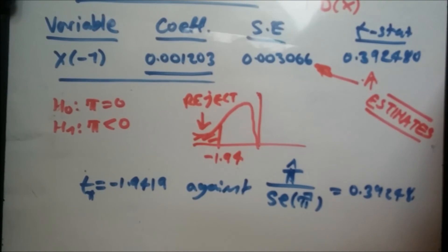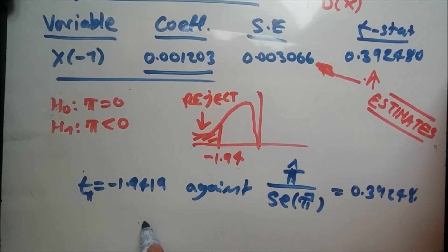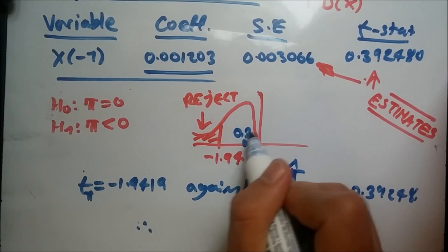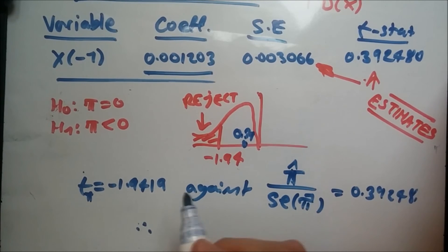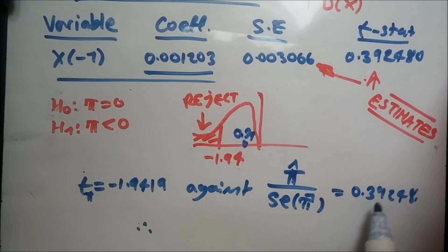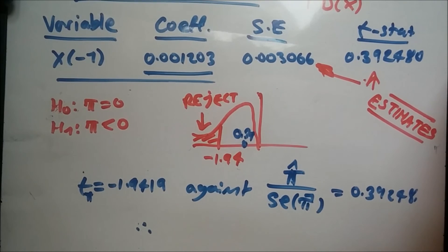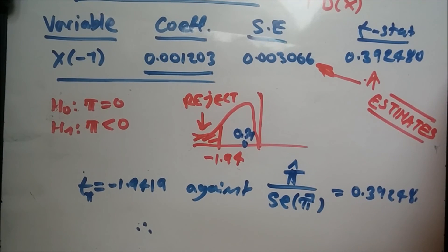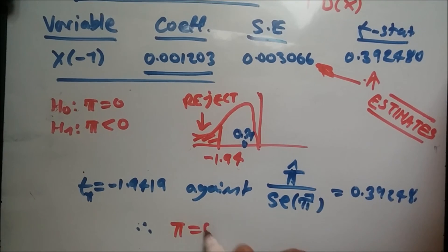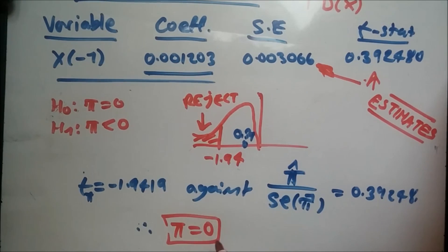Our conclusion therefore: in conclusion, notice that this value is probably somewhere here, 0.39. So actually we don't reject the null. We can conclude that there is no statistical evidence to say that there is no unit root in X. In other words, since we're rejecting the null - sorry, in other words this implies that X_t is difference stationary.